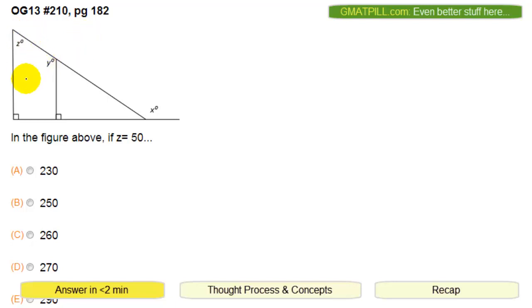In 210 we're given this geometry lines and angles question. We're told Z is 50, and since these are parallel that means this triangle is similar to the smaller one.